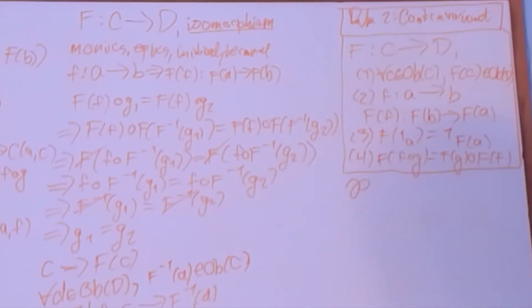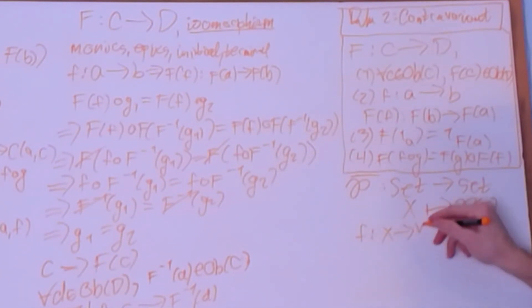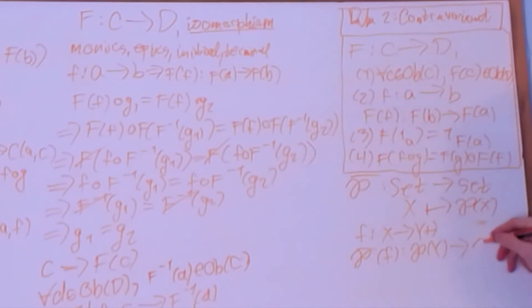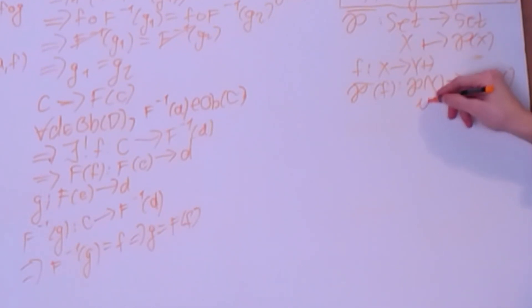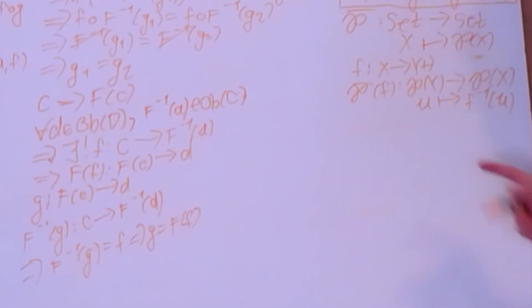A nice simple example of a contravariant functor is the contravariant power set functor from Set to Set. It sends a set X to the power set P(X), and it sends a function f from X to Y to P̄(f), which goes from the power set of Y into the power set of X by sending a subset of Y to its pre-image along f. Whereas the covariant power set functor sends you to the image, the contravariant power set functor sends you to the pre-image. Contravariant functors really are just normal functors written a little differently.